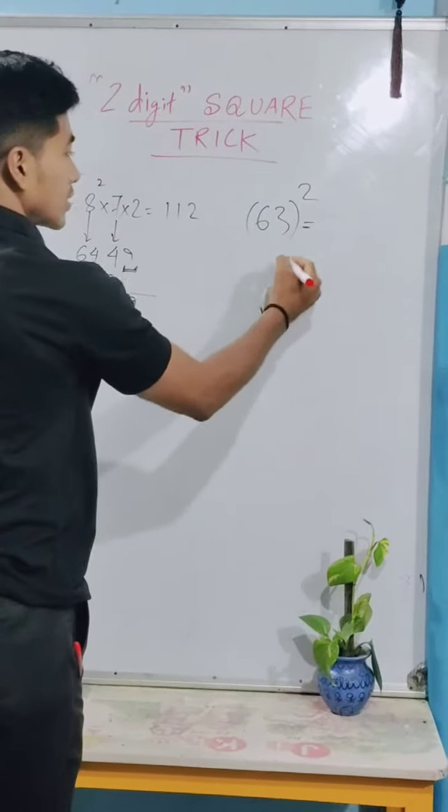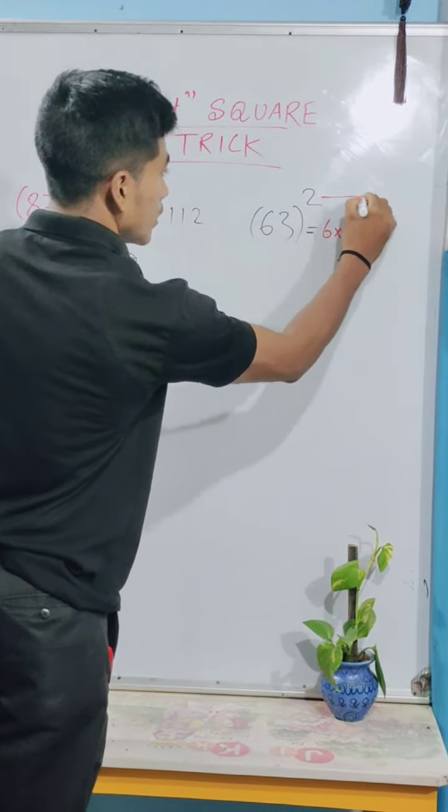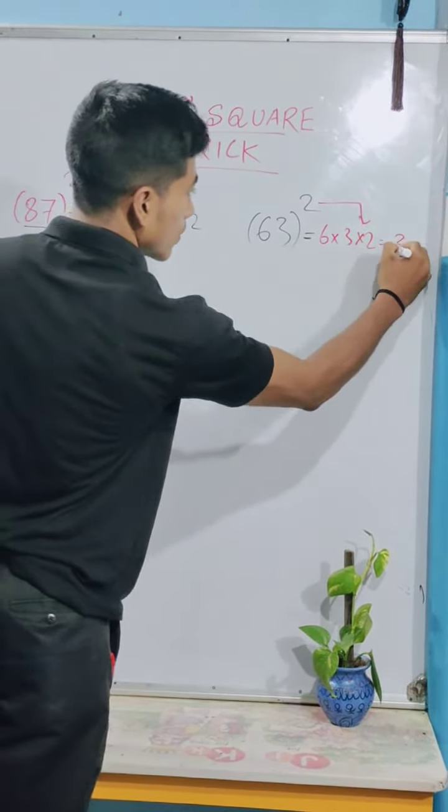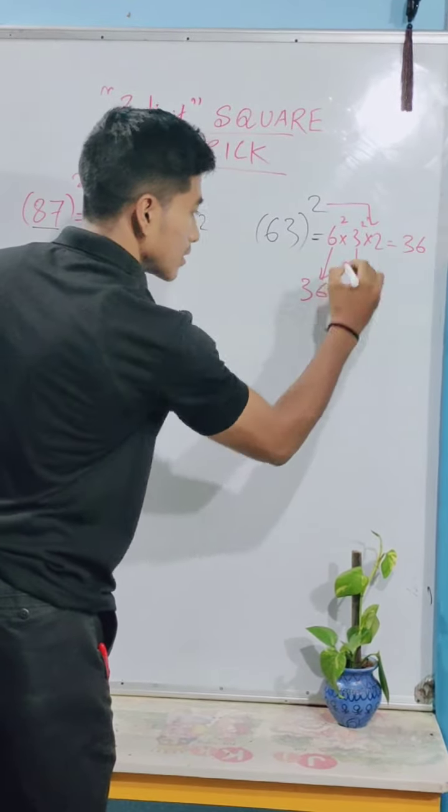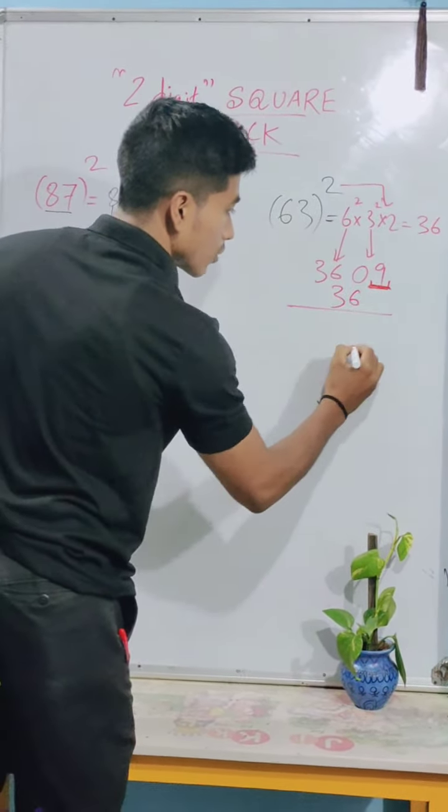Let me show 63 squared. Six squared is 36, three squared is 9. But 9 is a single digit, so we handle it accordingly. We have 36 in the correct position, then 9, giving us 3969. So 3969 is the right answer.